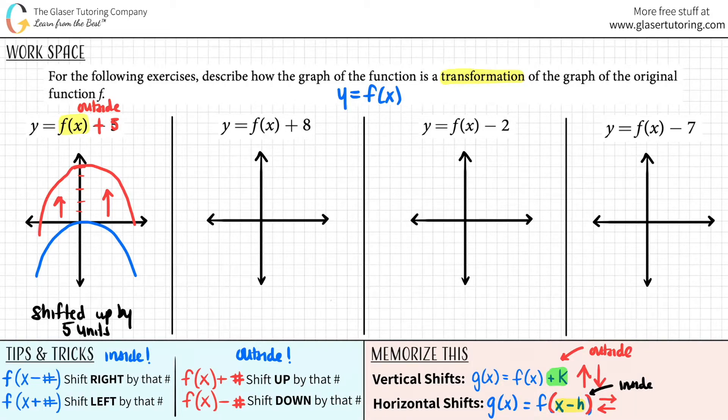Okay. Let's talk about the next one. Looks like we have a function here and the change is outside. It's a plus eight. So this is outside and outside changes are always vertical and it's a positive. Positive outside is always shifting upward. So you shifted up by eight units.